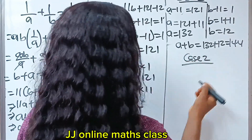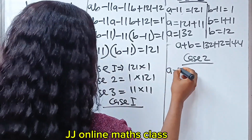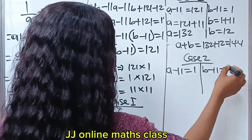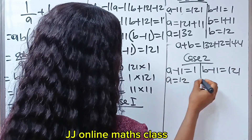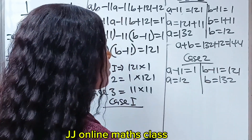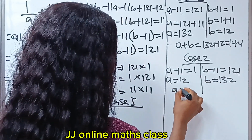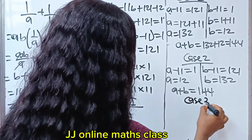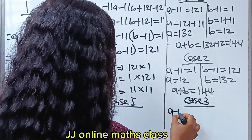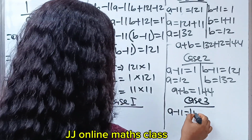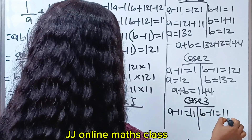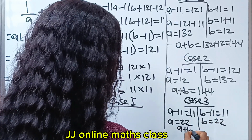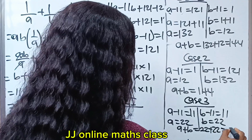For case 2: A minus 11 is equal to 1 and B minus 11 is equal to 121. So A equals 12 and B equals 132. When you add A and B, you get the same thing as case 1: 144. For case 3: A minus 11 is equal to 11 and B minus 11 is also equal to 11, so A equals 22 and B equals 22. Therefore A plus B equals 22 plus 22, which is 44.